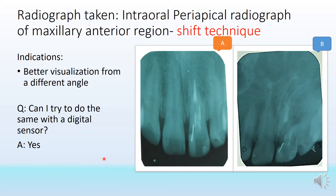Today the radiograph shown is an intraoral periapical radiograph of the maxillary anterior region. We have two radiographs here — A and B. Both are showing the same region, but radiograph B is different from radiograph A because it was taken with a tube shift.